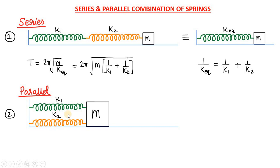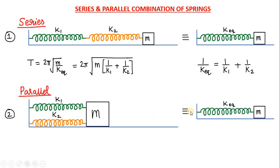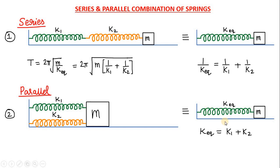Let us come to the parallel combination. This arrangement of two springs in parallel can be replaced with one single spring of spring constant k equivalent. In this parallel combination system, the k equivalent will be given by the sum of the spring constants k1 plus k2. You can see this is the opposite formula of the parallel combination of the resistances. In case of resistances, the parallel combination formula is given by one form and the series combination formula by another. But in springs, it becomes completely opposite.